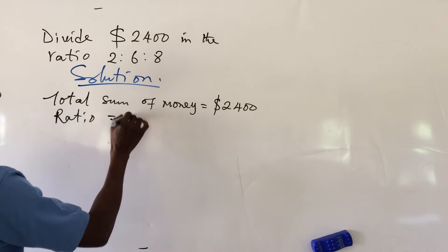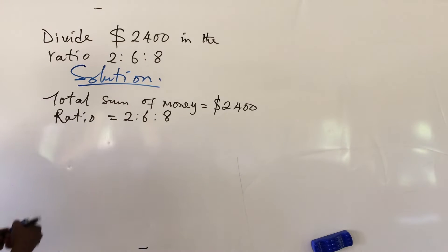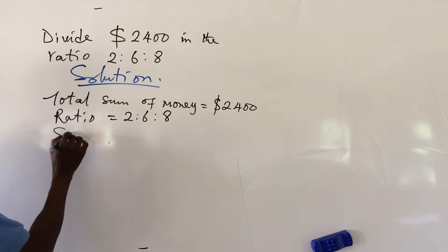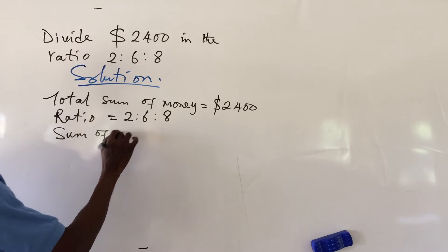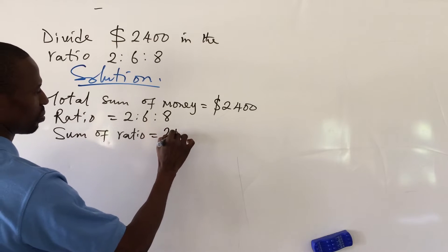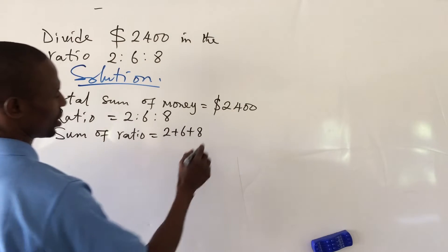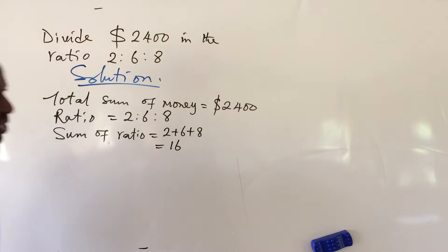The next thing we look at here is sum of ratio. Sum of ratio equals 2 plus 6 plus 8, and this will give us 16. So we have this to be 16.